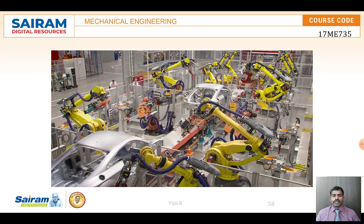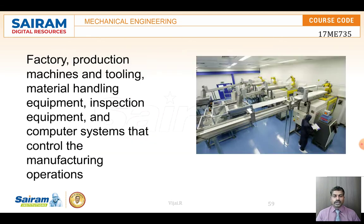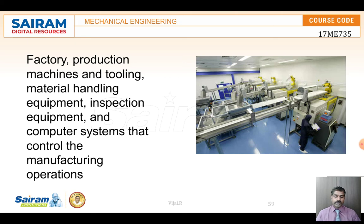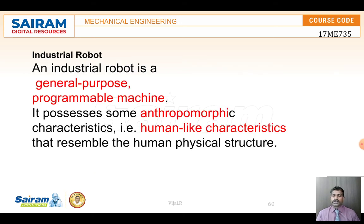Nowadays automation is very important; it reduces human effort and can do a greater number of tasks consistently and with accuracy. It is mainly based on control systems. In the factory environment we see production machines, welding operations, material handling operations — bringing components from one place to another — as well as inspection and packing. All these activities need a control system with feedback devices.